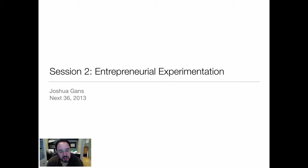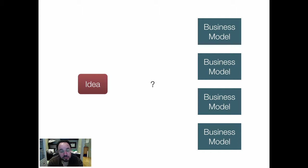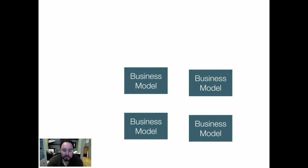Welcome to the second part of this second session on entrepreneurial experimentation. You'll recall from last time and from the time before that ideas — an idea can have associated with it several business models that can bring that idea to market. There was an issue of how do we select which business model for our venture. As you'll see in this lecture, it basically has to do with whether we're going to experiment or not, and how we should experiment.